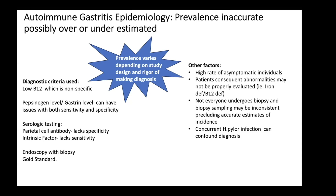The gold standard is considered endoscopy with biopsy. Other factors to consider: this disease has a high rate of asymptomatic individuals who probably would not seek any therapy. Early in the course, when patients are younger, they may present with mild iron or B12 deficiency, be repleted, and never receive further evaluation. When someone undergoes endoscopy, they don't always have a biopsy, and providers may be inconsistent in how many biopsies are taken and where. Concurrent H. pylori infection can also confound the diagnosis.